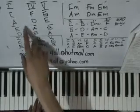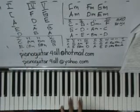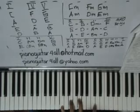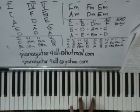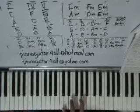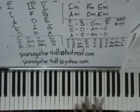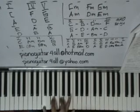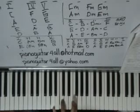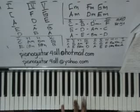Now we're going to the inversion — the first inversion. C can be played in two more ways. Transfer the C there — this is also C. And transfer the E there — this is also C. Only three possibilities. With an F: one possibility, second possibility, third possibility. And the G.